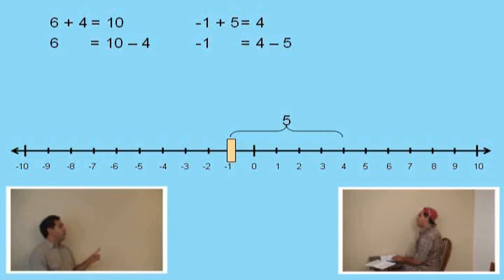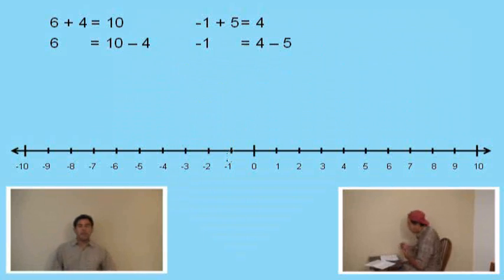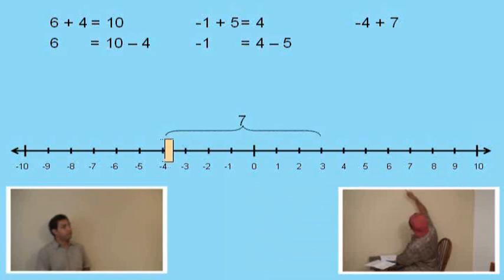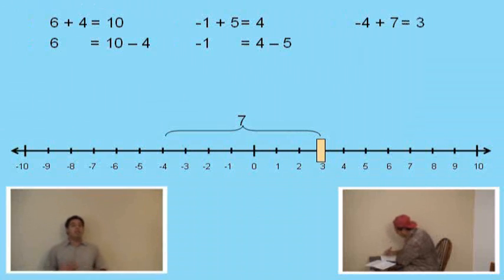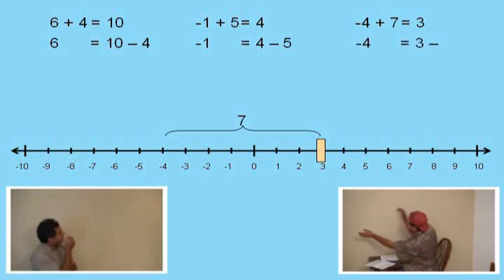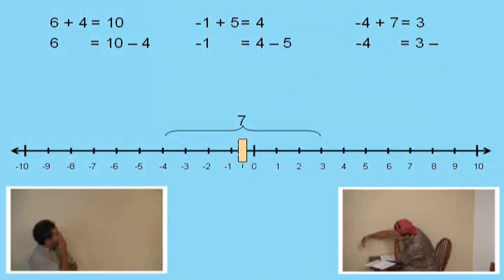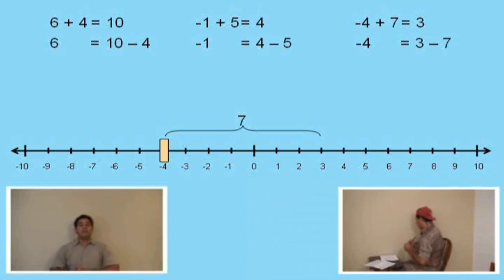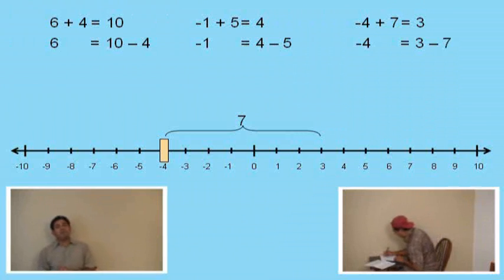Okay, Charlie, one more. Bear with me. We're working up to this. What is negative 4 plus 7? 3. Very good, Charlie. It is 3. Okay. Now, what number do I subtract from 3 to get negative 4? Look at the number line. 7. Very good, Charlie. It is 7.